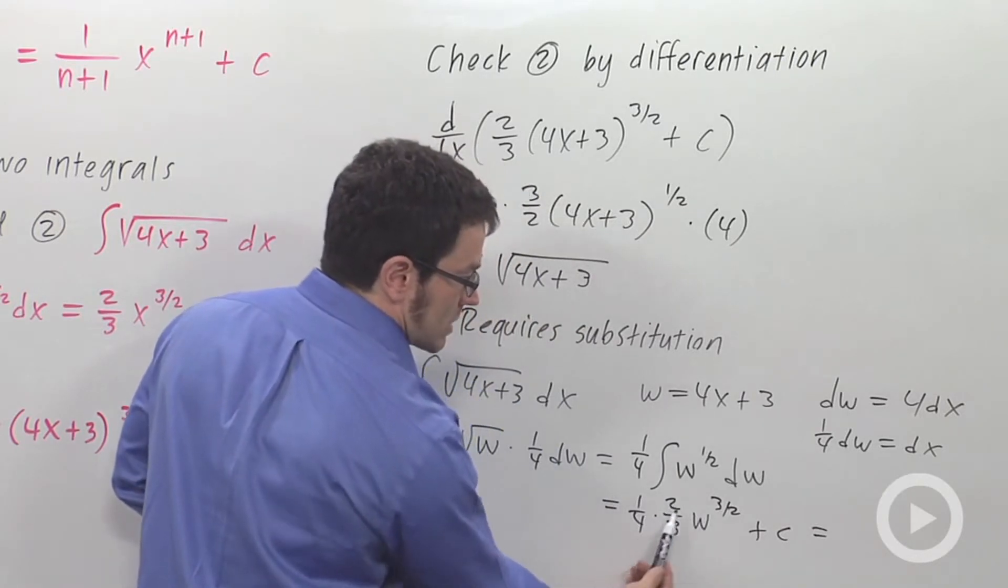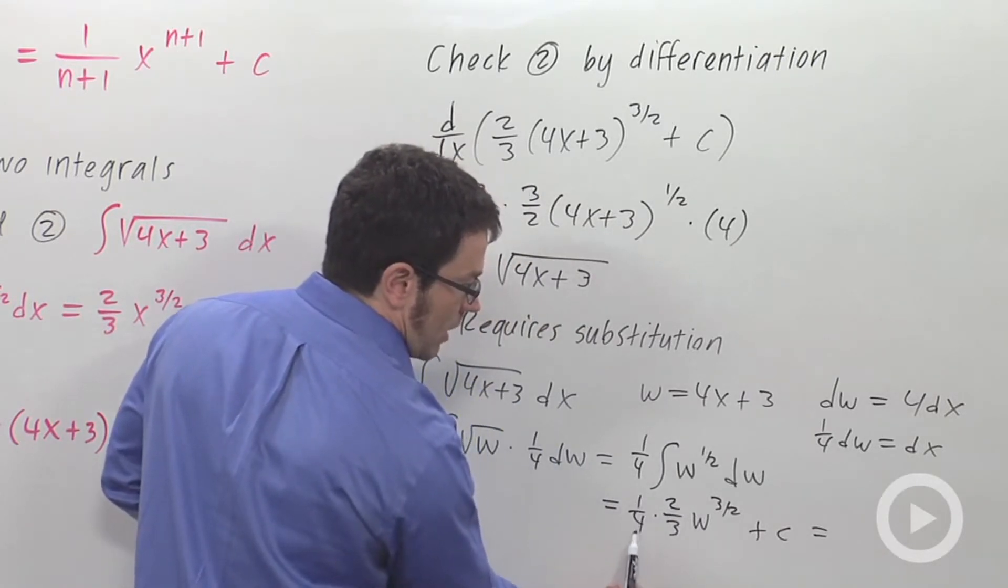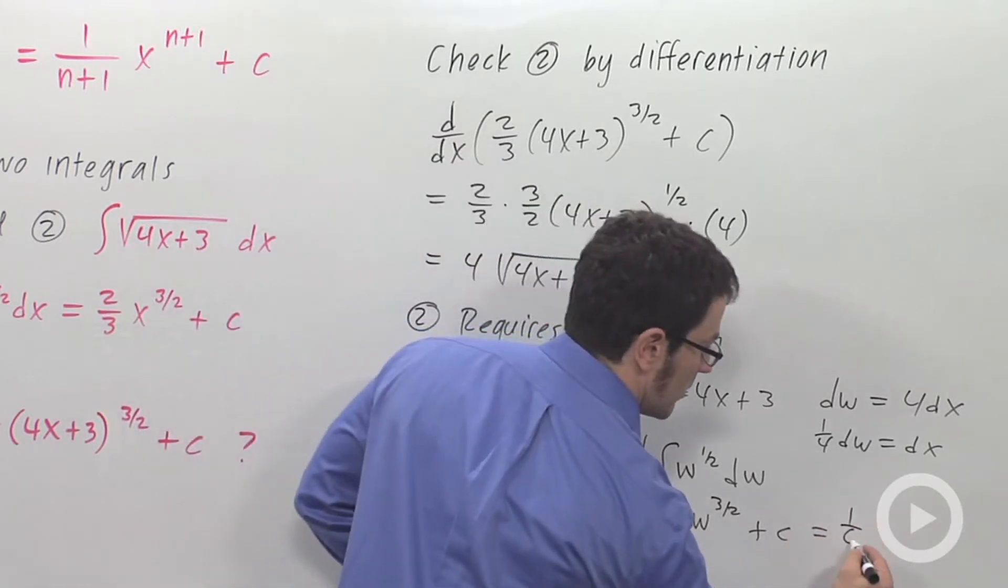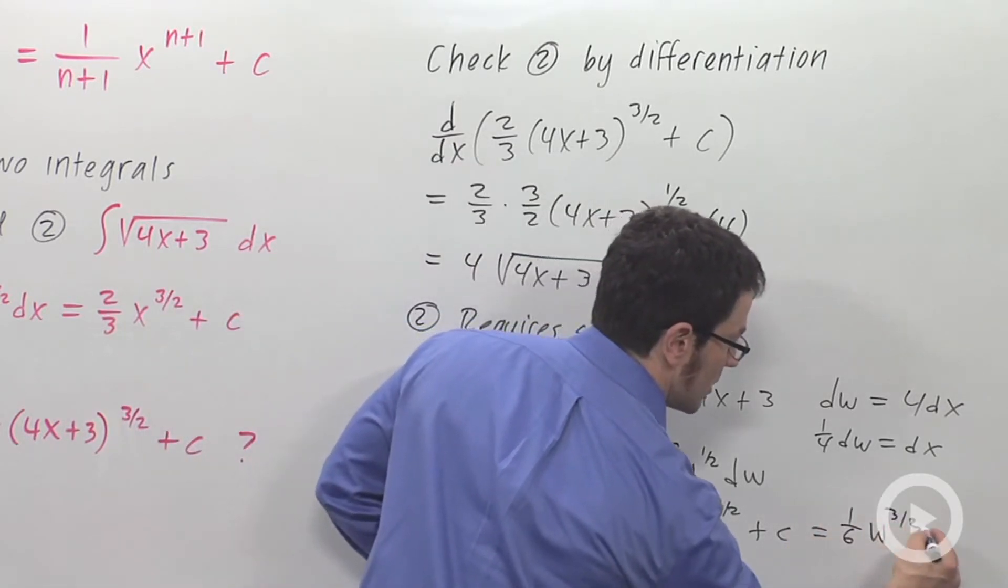This gives me 1 sixth, right? The twos cancel. I get 1 half times 1 third, 1 sixth w to the 3 halves plus c.